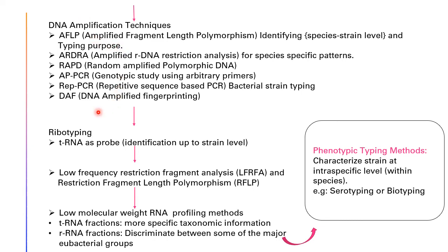After DNA amplification techniques, you proceed to ribotyping — studying RNA. tRNA is used as a probe for strain-level identification. Low frequency restriction fragment analysis (LFRFA) and restriction fragment length polymorphism (RFLP) are also used. Then low molecular weight RNA profiling methods — tRNA fractions and rRNA fractions — are applied.